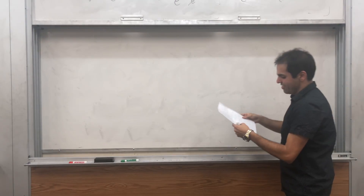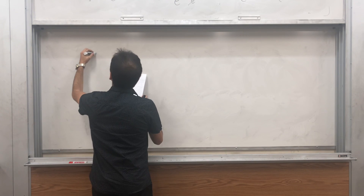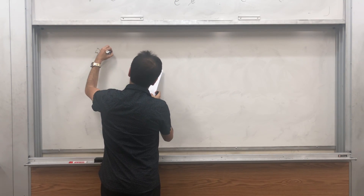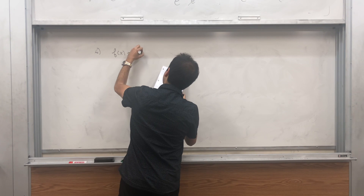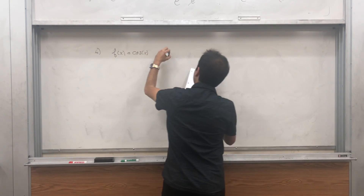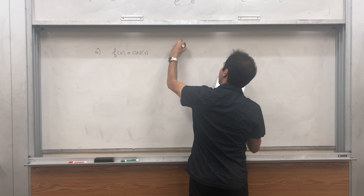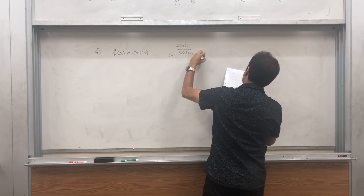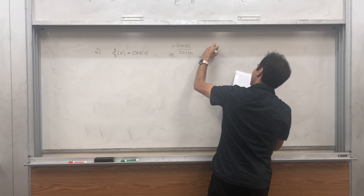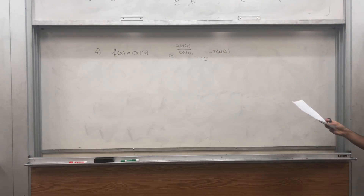How about trig functions? f(x) equals cosine of x. Then we get e of the derivative of this: minus sine of x over cosine of x, and that becomes e to the minus tangent of x. You can continue like that, so it's really neat.